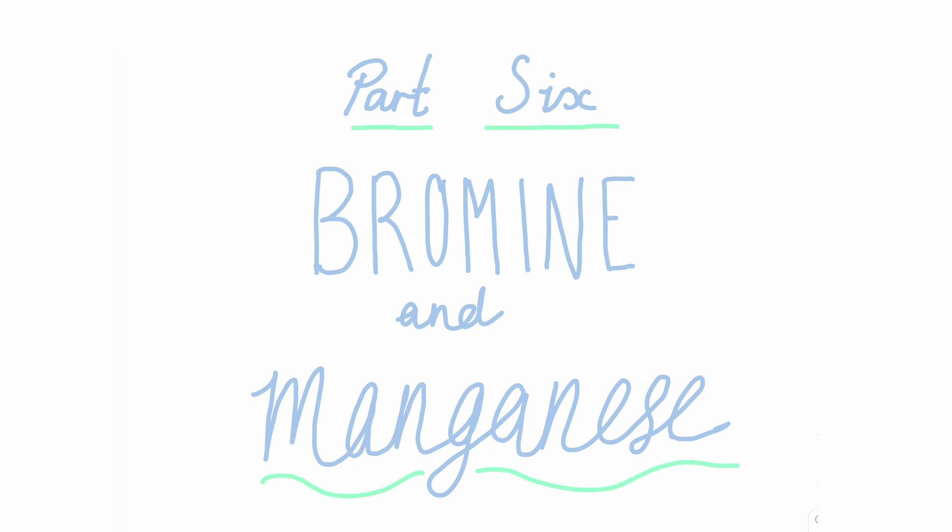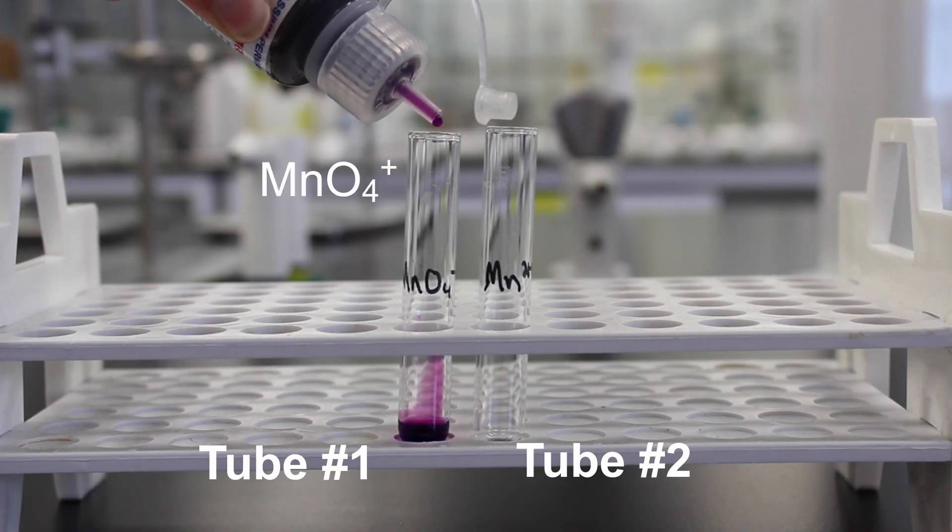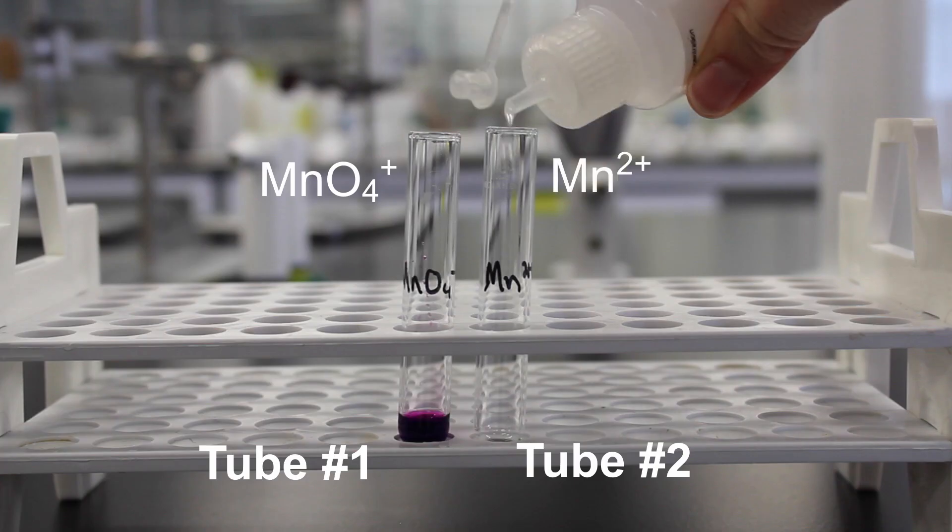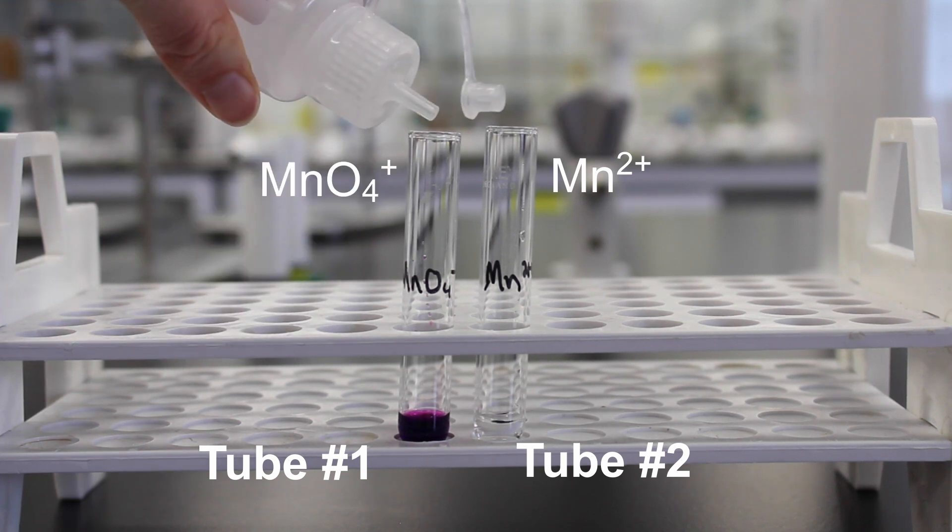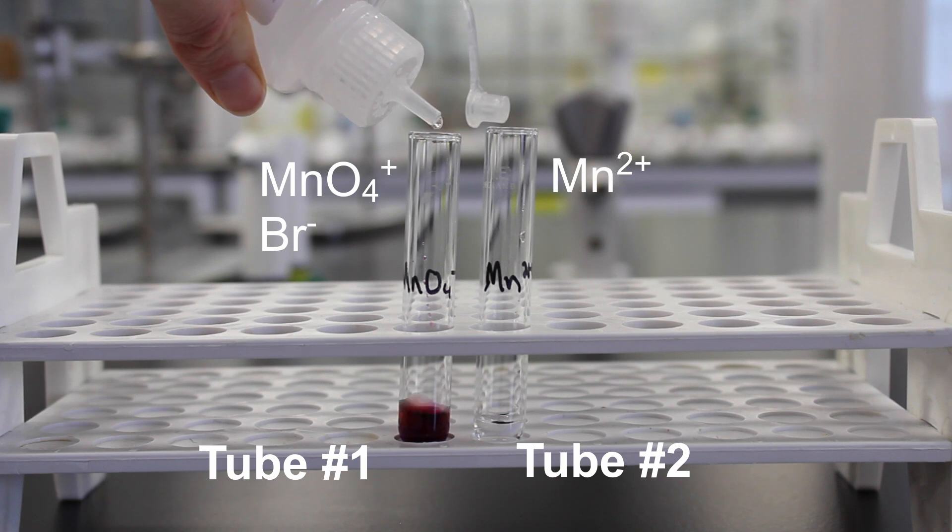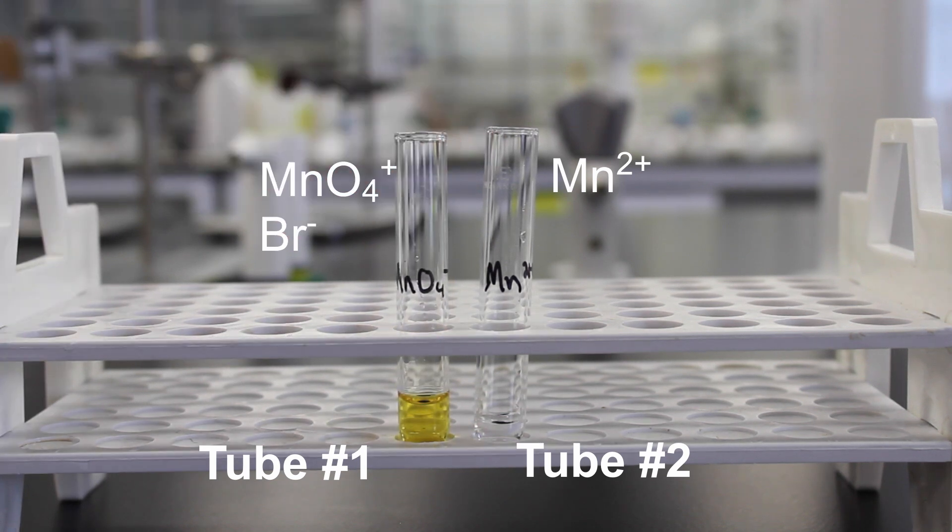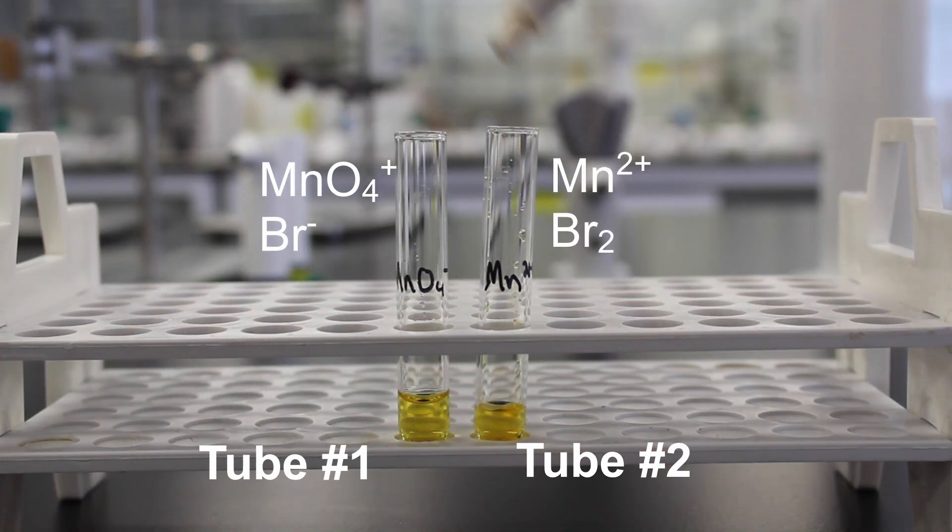Our final experiment today is a comparison of the bromine and manganese couples. Add a few drops of your potassium permanganate to your first test tube. Look how beautiful that purple is. Now add drops of manganese 2+ ions to your second test tube. To each test tube, add the respective appropriate bromine species. This experiment doesn't require the addition of any chemical indicators, because potassium permanganate is a beautiful deep rich purple, while manganese 2+ ions are colourless in solution. Keep in mind that bromine water is orange to begin with.